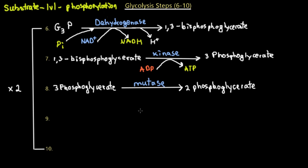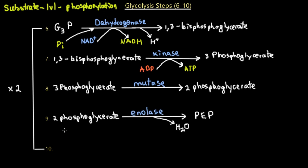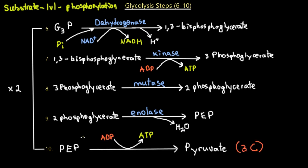Step nine: 2-phosphoglycerate undergoes a redox reaction catalyzed by the enzyme enolase, producing a PEP molecule — phosphoenolpyruvate — along with water as a side product.